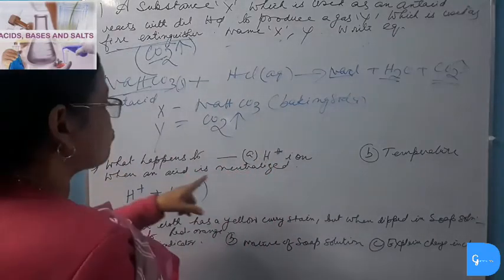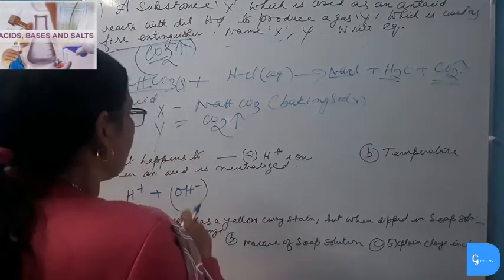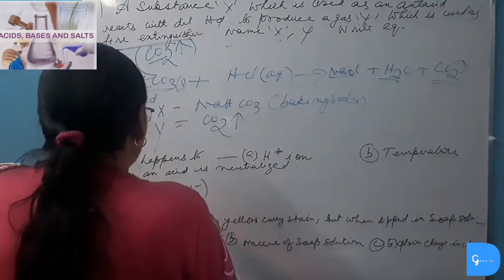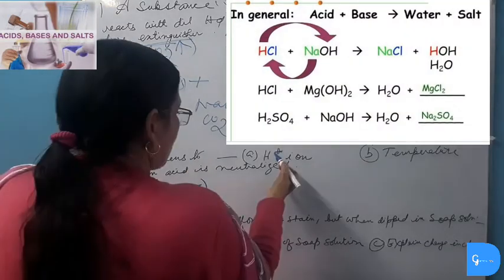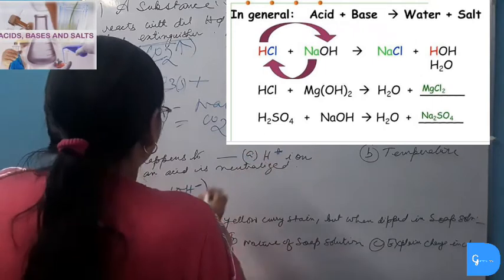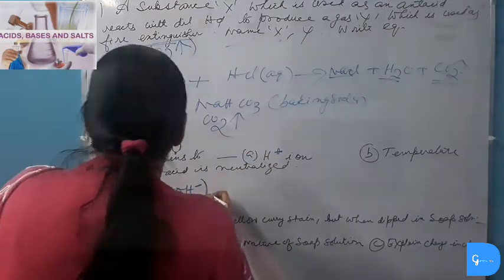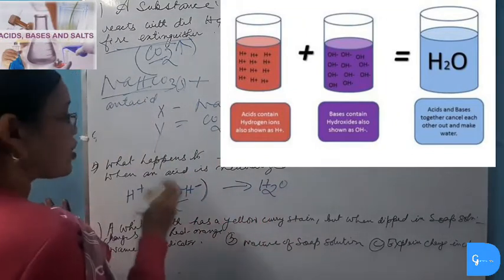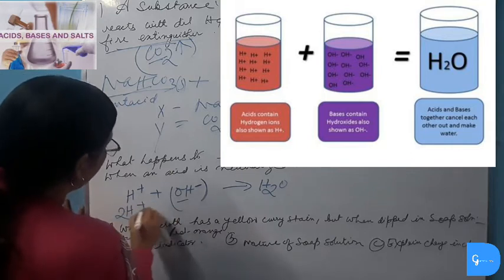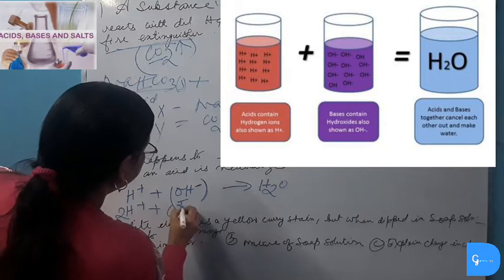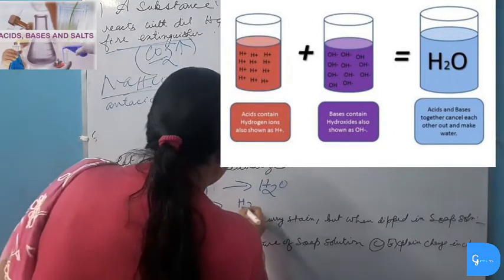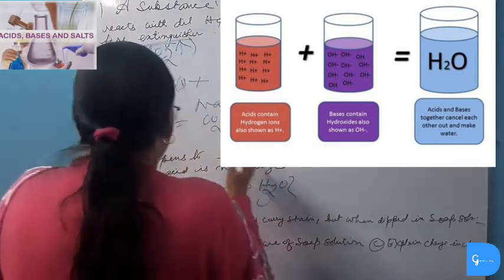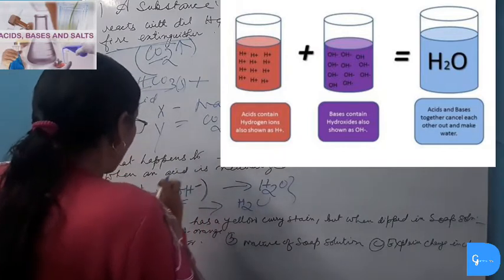What happens to hydrogen ions when an acid is neutralized? Acid contains hydrogen ions (H⁺). When acid reacts with metal hydroxide, hydrogen ions combine with hydroxide ions to form water — neutralization takes place. Even in the case of metal oxide, hydrogen ions combine with oxide ions to form water. So H⁺ combines with the negative ion (OH⁻ or O²⁻) to form water.